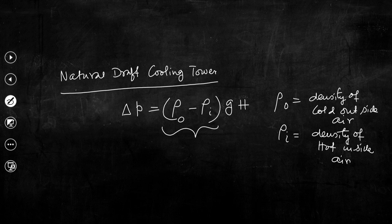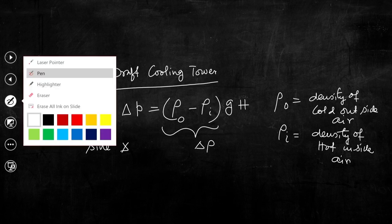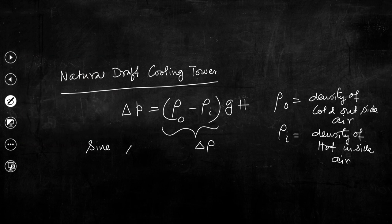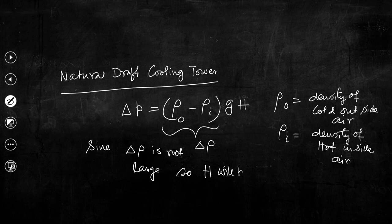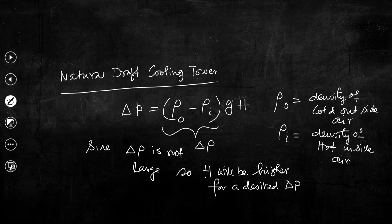Air has to flow over this particular arrangement where it experiences substantial resistance because of the fill structure. To overcome that resistance and maintain a certain flow rate of air, the pressure difference must be sufficient. Since the density difference is not very much — the density of cold air and hot air are close — what we need to do in a natural draft cooling tower is make H very large to get a sufficient value of delta P. That is why natural draft cooling towers are very tall.